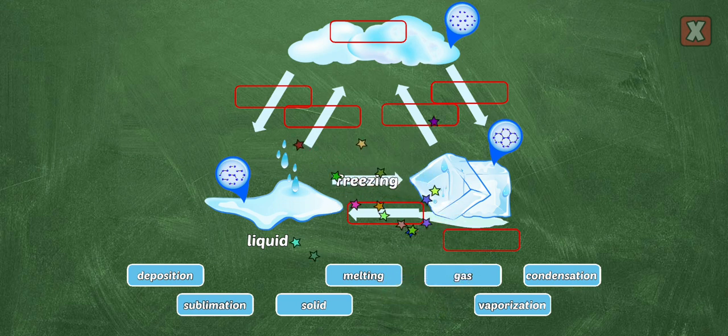Freezing is when a liquid turns into a solid. When heat is taken away, the molecules move slower.